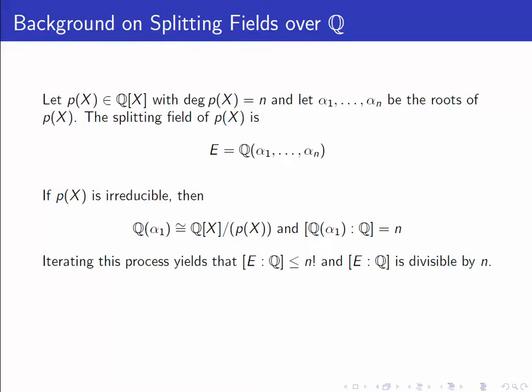Iterating this process yields that the degree of the splitting field over Q is always less than or equal to n factorial. And note that E over Q is always divisible by n.